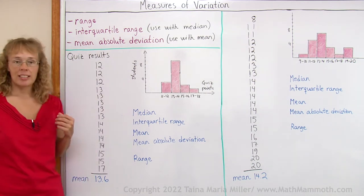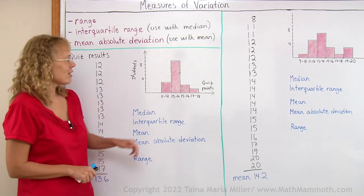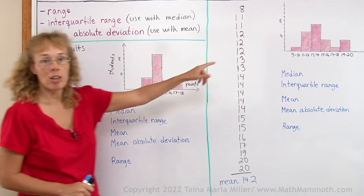And my data here is for two groups of students that took a quiz. And I have made a histogram for both sets of data. Here is the one group and over there is the other.